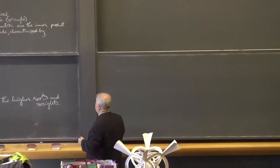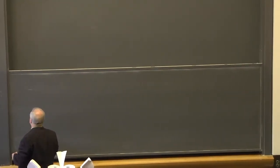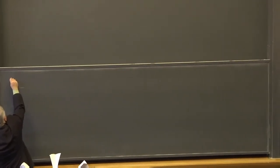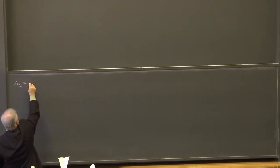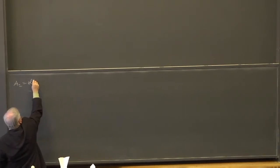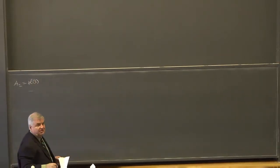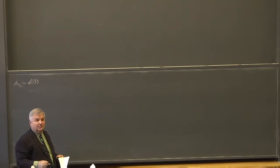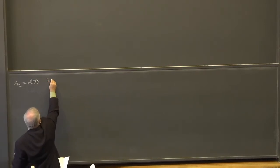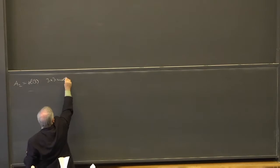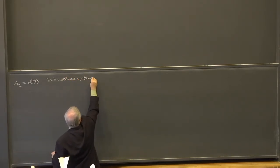What is meant by this long theorem? We take first the graph A2, which is the graph of SL3 — three by three matrices with trace zero.